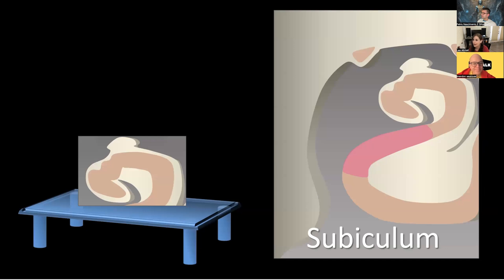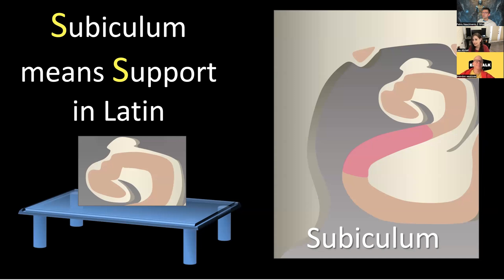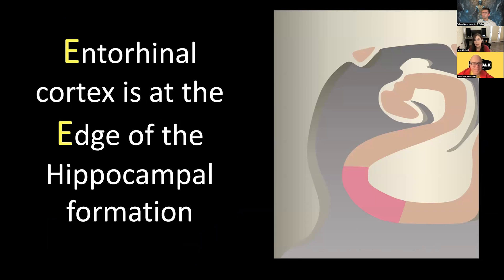Just below the hippocampus is the subiculum. Subiculum means support in Latin — it's like a table supporting the hippocampus. S is for support, right below the hippocampus itself. Then right below the subiculum is the entorhinal cortex. E for entorhinal — it's at the edge. So subiculum for support directly beneath, and then at the very outermost edge of that curvature is your entorhinal cortex.